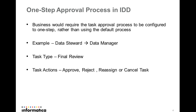The one-step approval process, as the name says, involves just one step of approval in the workflow. For example, when you consider a data steward and data manager, the data steward will create or edit the data and then send it to the data manager for approval. So in this case, there is only one step of approval involved.